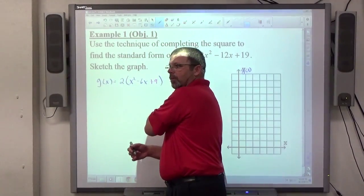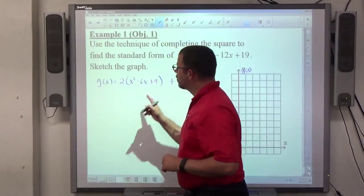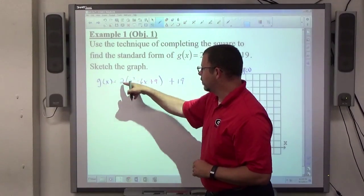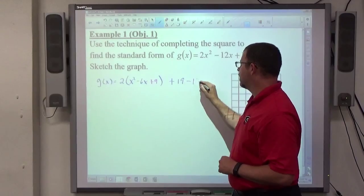But I want g(x) equal everything over here, right? So I don't want extra stuff over there. So instead of putting a plus 18 over there, to account for the plus 18 I put here, I'm going to put a minus 18 out here.